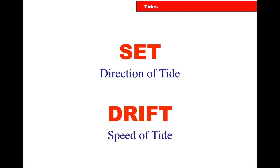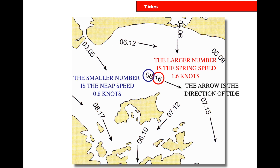Tides have set, which is the direction of the tide, and drift, which is the speed of the tide. The larger number will be the springs, the smaller number will be the neaps. So for example, 0.8 and 1.6 — it isn't 8 knots and 16 knots, otherwise the tide would be going rather fast. They don't put the decimal in, otherwise the tidal stream atlas gets cluttered.